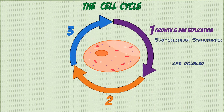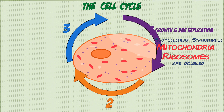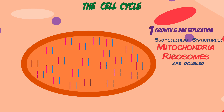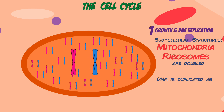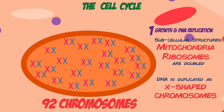This includes all the subcellular structures such as mitochondria and ribosomes. It also means that all the genetic material in the nucleus needs to replicate so that both daughter cells will get exactly the same DNA as each other. To do this, all 46 chromosomes duplicate themselves to create X-shaped chromosomes with arms which are identical to each other. So during this brief moment in time, there are actually 92 chromosomes in the cell, but half of them are just copies.